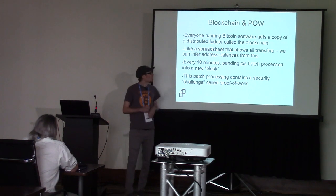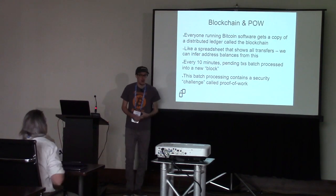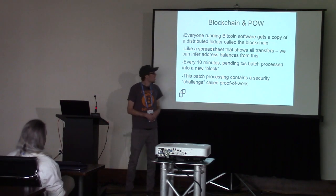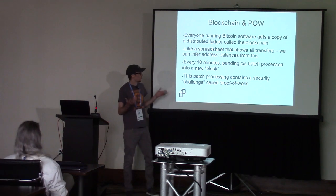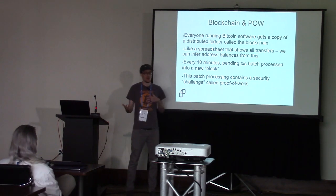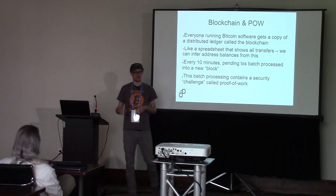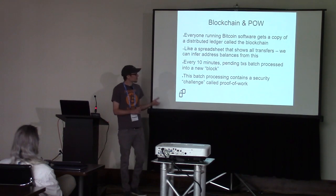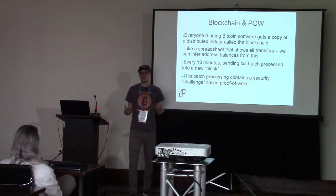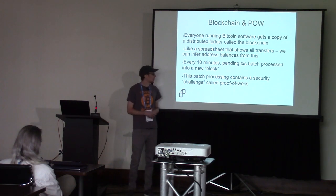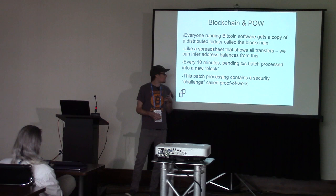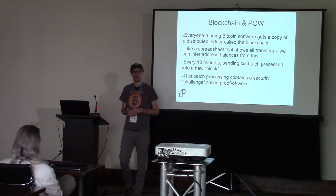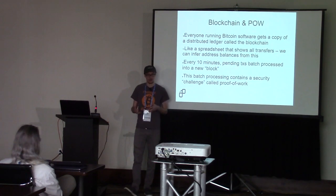On the Bitcoin blockchain, everyone running full node software gets a copy of the distributed blockchain ledger, which behaves like a spreadsheet showing all transfers between parties. Every 10 minutes, all pending transactions are batched together into what are called blocks. This batch processing contains a security challenge called proof of work, and this is how we avoid problems like the double spend problem.